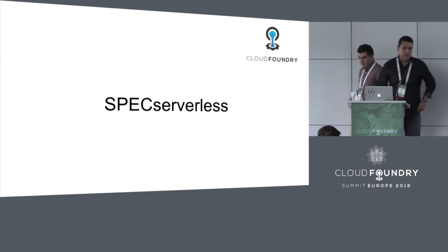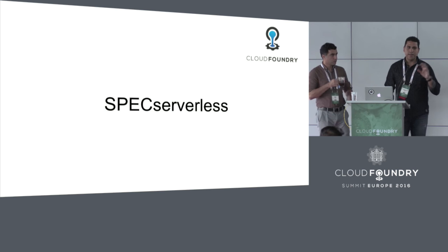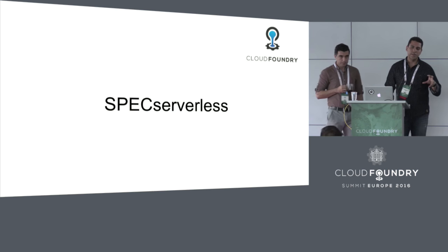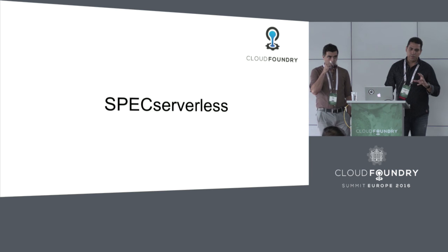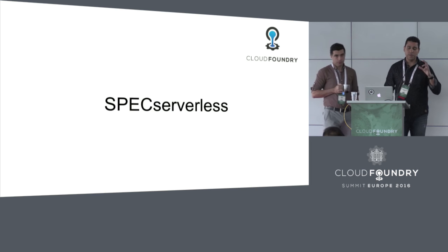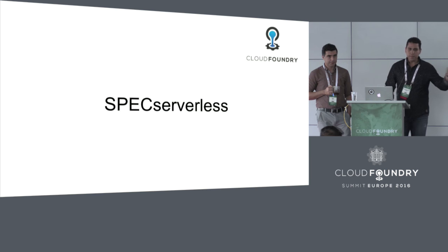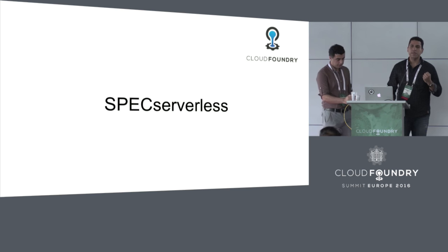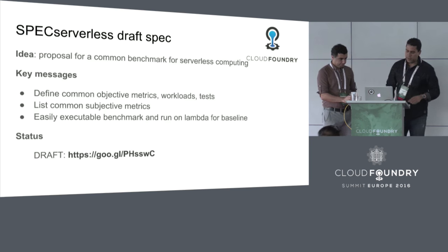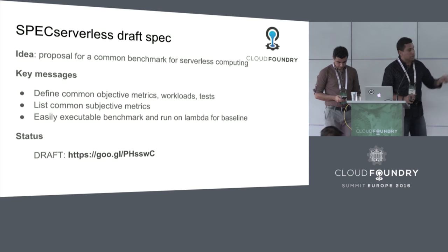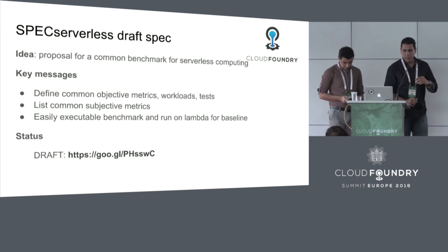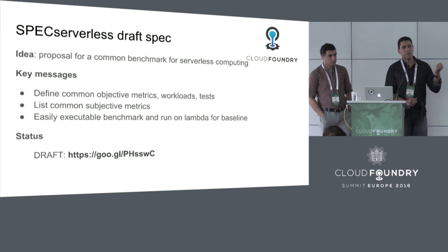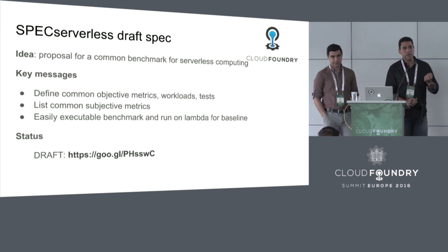One thing we should stress is that a lot of these environments are still in beta — OpenWISC, Azure, and possibly Iron I.O. We tried to get Google Functions, but it's in beta and not even accessible. So the numbers we're showing are from beta environments, except for Lambda — keep that in mind. Where we go from here is to release something like a spec serverless: we've got a draft document, and if you send us an email, we'll send it to you. The idea is to essentially create a spec serverless, similar to how you can run SPEC benchmarks to compare CPUs when Intel releases new ones.